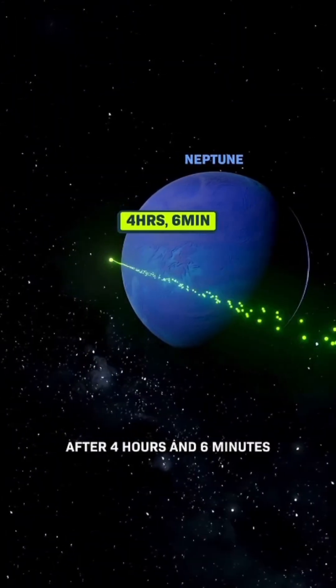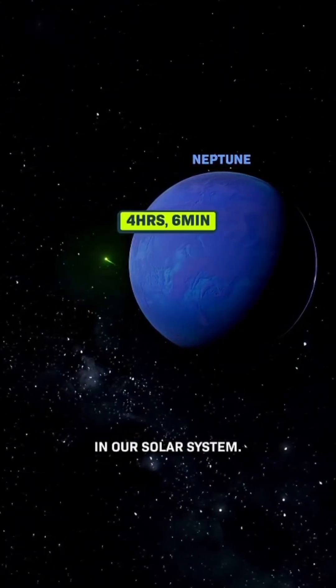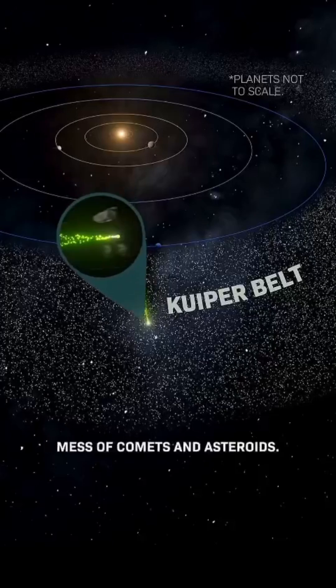After 4 hours and 6 minutes, you'd pass the farthest planet in our solar system. And you'd have to get through this mess of comets and asteroids.